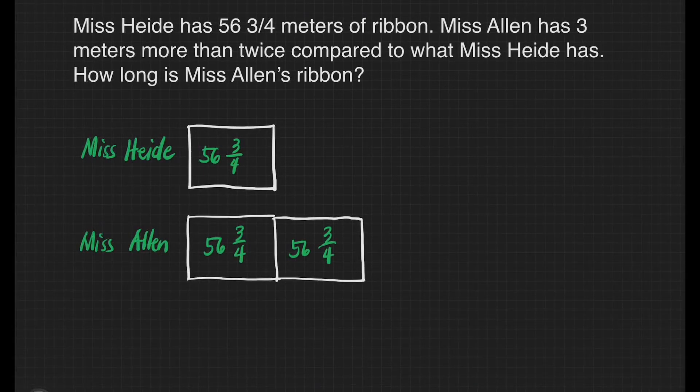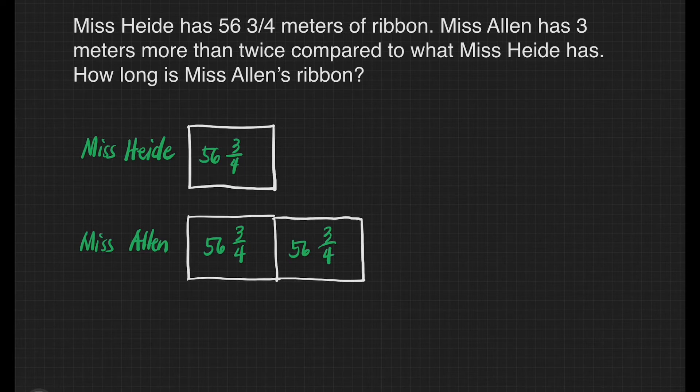How are we going to show 3 meters more than twice? So it means we have to have 2 boxes and then we will have another box that has 3 meters inside. It's just a small box that will represent 3.